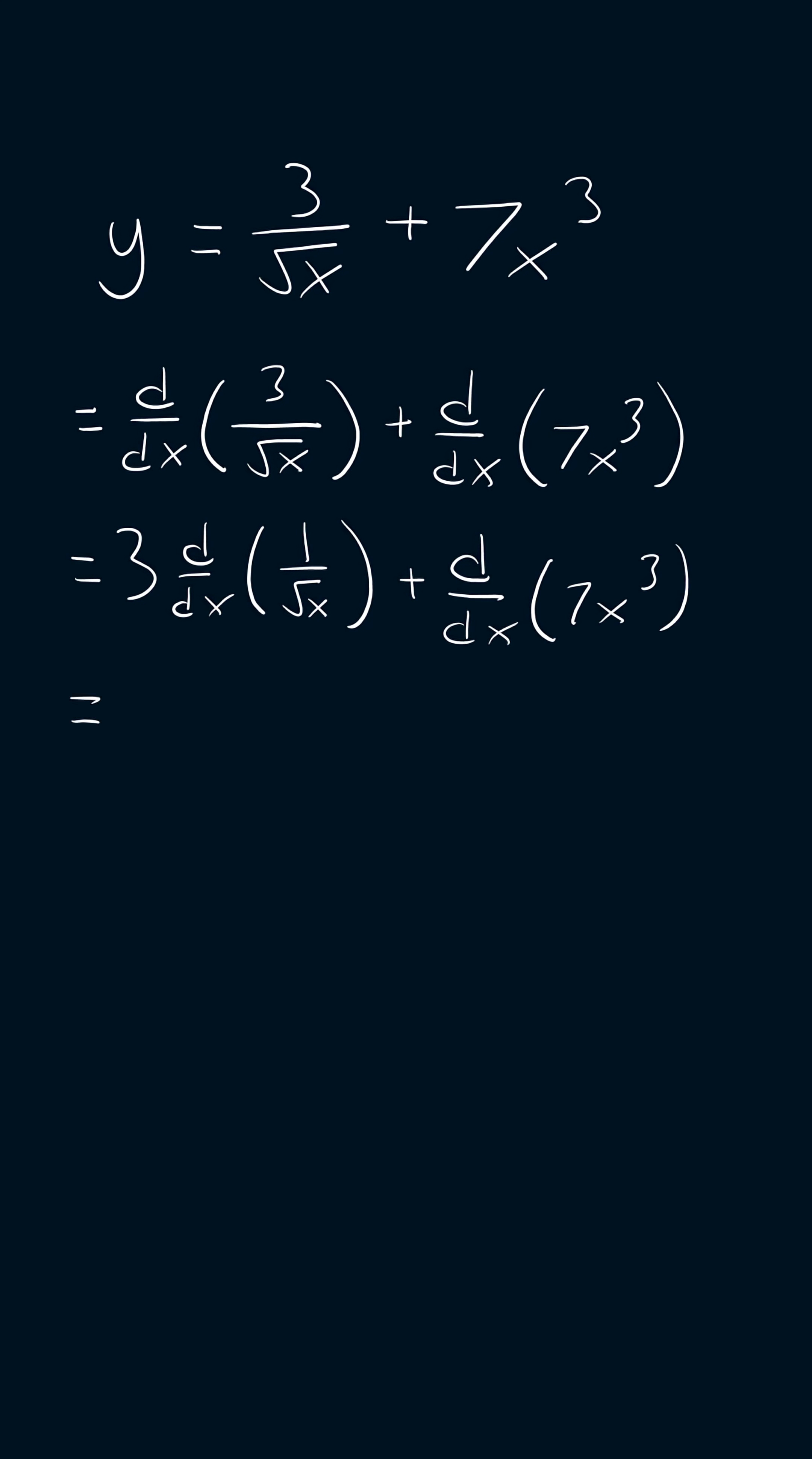Now I'll apply the radical rule and the exponent rule. We'll get 3 times the derivative of x to the power of negative 1 half plus the derivative of 7x cubed.